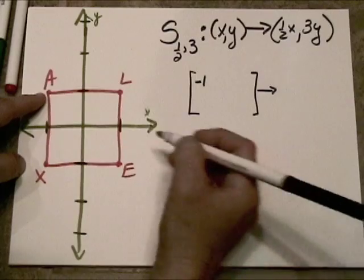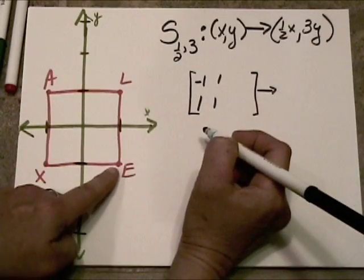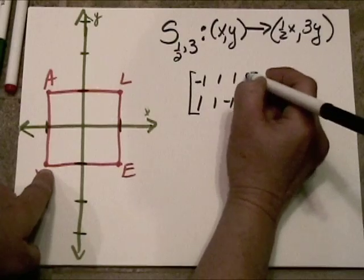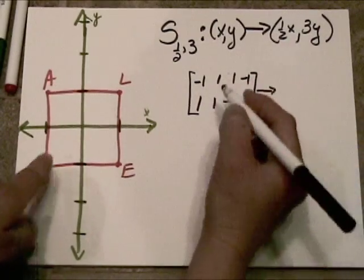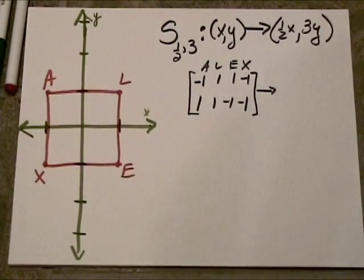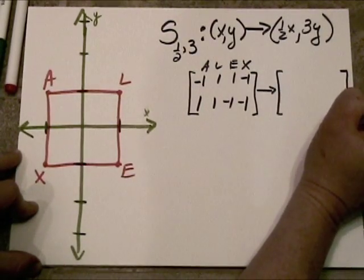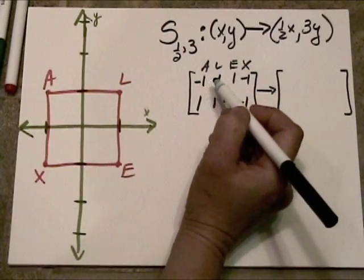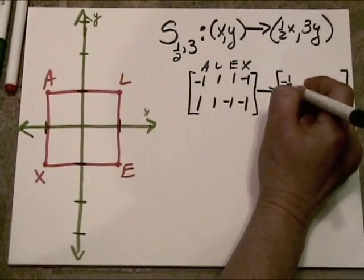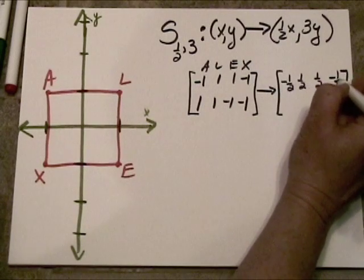Point A is at negative one, positive one. Point L is at one, one. Point E is at one, negative one. And point X is at negative one, negative one. So there is Alex's point matrix. Now let's see what she's going to turn into when we apply the scale change. All of her x coordinates are going to be cut in half. So this is going to become negative one-half, positive one-half, positive one-half, and negative one-half.